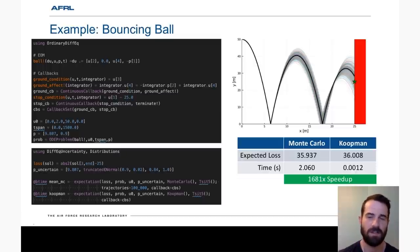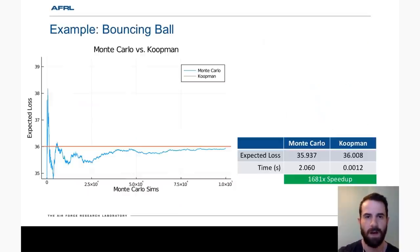For this particular case, the Koopman approach is over 1600 times faster than running Monte Carlo. Now here we ran a hundred thousand Monte Carlo simulations. So one may say, well, that was overkill and made the problem look worse. But if we look at kind of the rolling computation of the expected loss via Monte Carlo, we show that even after a hundred thousand simulations, it's still asymptoting to the solution computed by the Koopman approach.